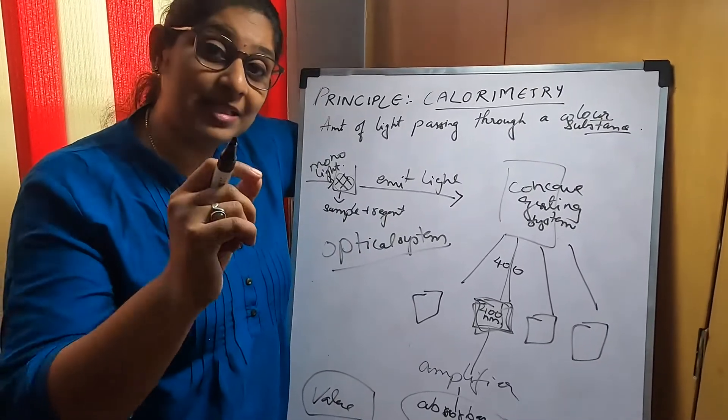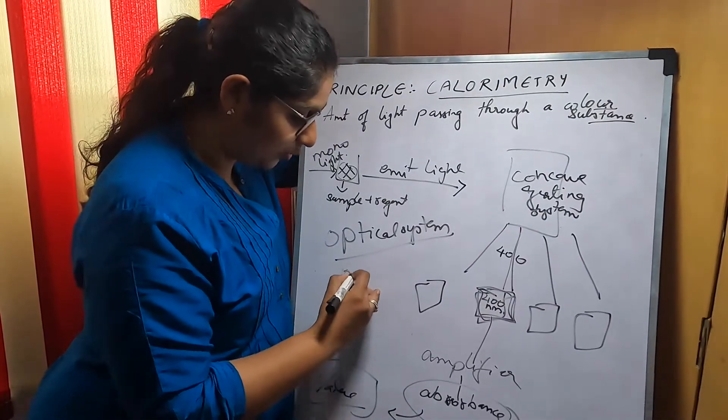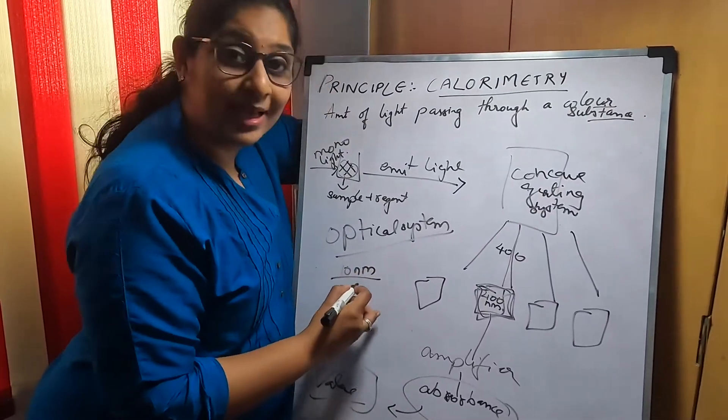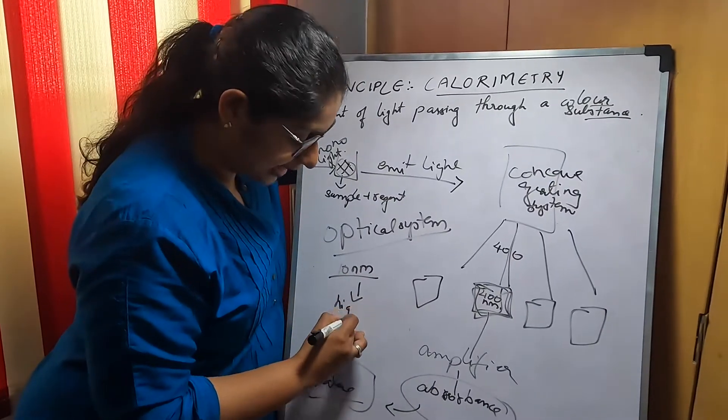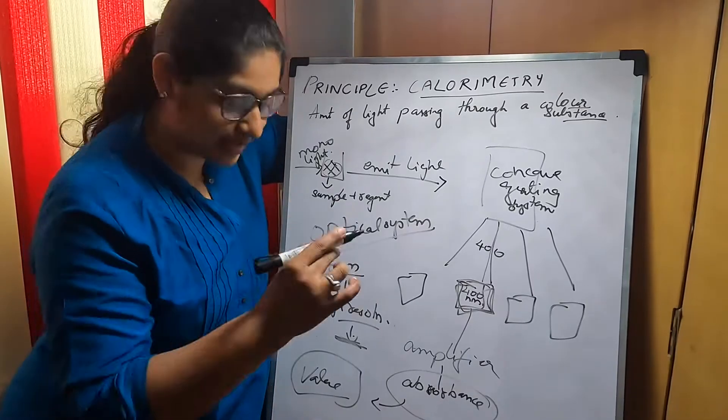In this optical system, we also need to know about spectral bandwidth. If the spectral bandwidth is around 10 nanometers, it means it will have high resolution. When there is high resolution, we will get a very precise value.